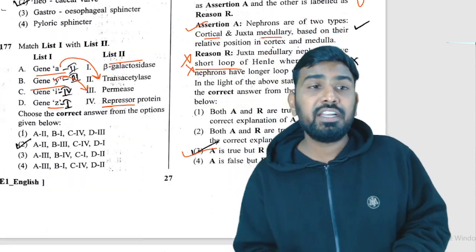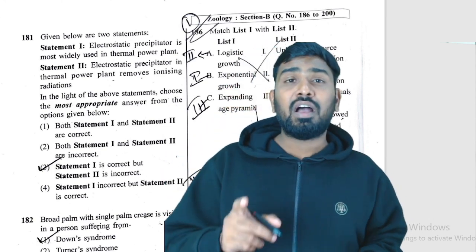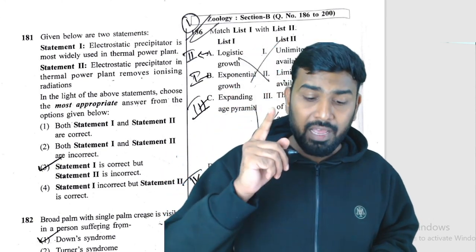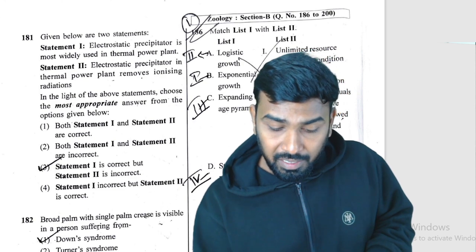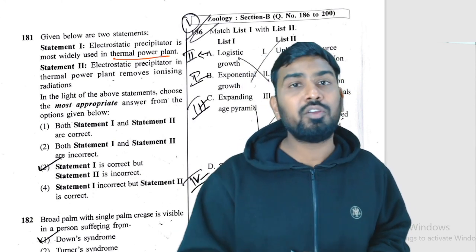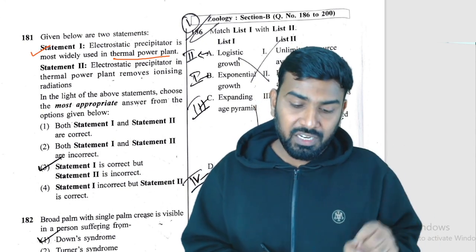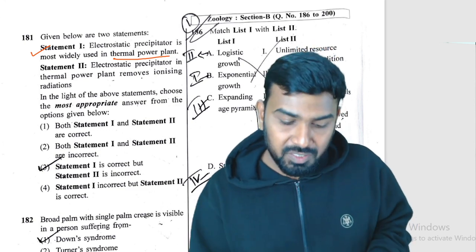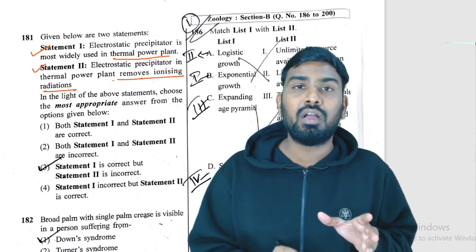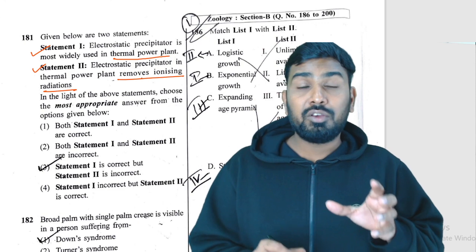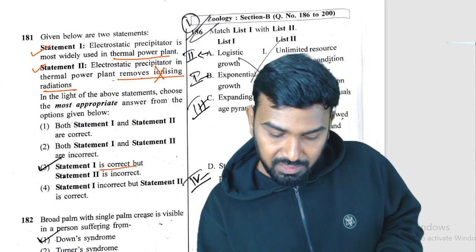Question 181: statement one — electrostatic precipitator is most widely used in thermal power plants — correct, and NCERT highlights this. Statement two says electrostatic precipitators remove ionizing radiation — wrong. They are used to remove particulate matter, not ionizing radiation. So statement one is correct and statement two is incorrect.